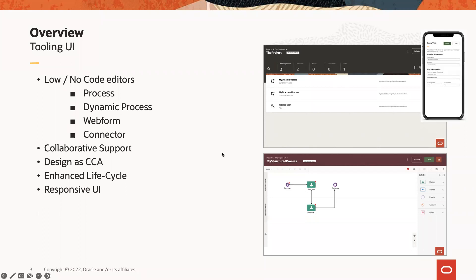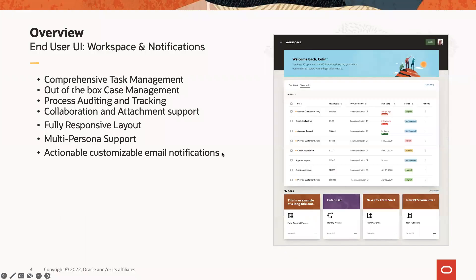The second user experience is for the end user. We target two key types of personas here. One is an administrative and operational persona, where users manage the system and the various transactions going through it. The second is the business user, where based on notifications generated from our product, users can view tasks assigned to them, look at form details, and take key actions such as reviewing details and approving things.